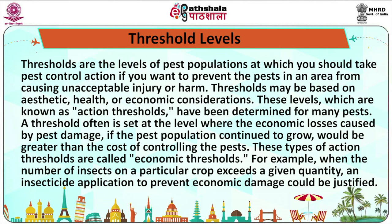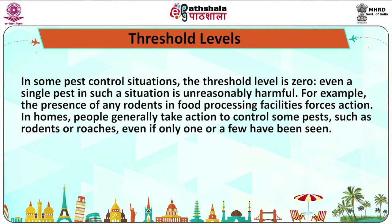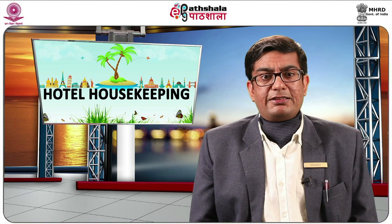These levels, known as action thresholds, have been determined for many pests. A threshold often is set at the level where the economic losses caused by pest damage would be greater than the cost of controlling the pests. These are called economic thresholds. For example, when the number of insects on a particular crop exceeds a given quantity, an insecticide application to prevent economic damage could be justified. In some pest control situations the threshold level is zero — even a single pest in such a situation is unreasonably harmful. For example, the presence of rodents in food processing facilities forces action. At home, people generally take action to control rodents or roaches even if only one or a few have been seen.